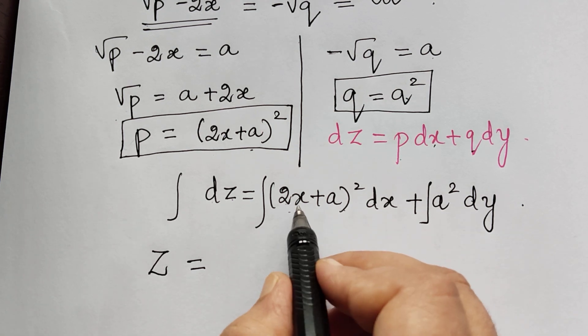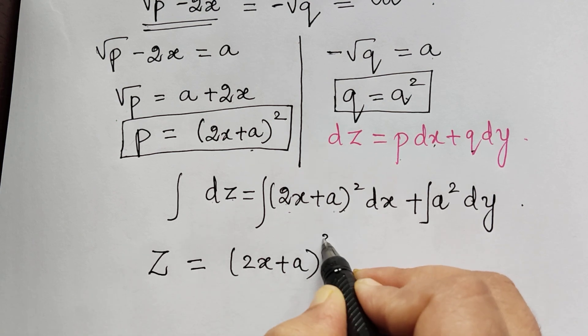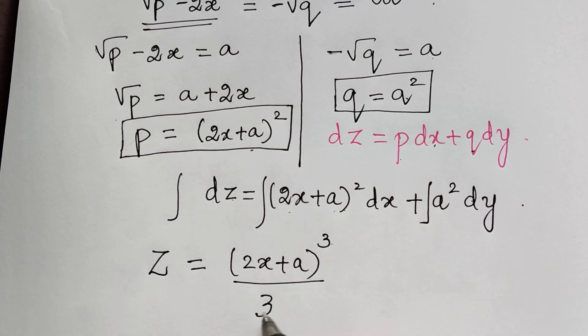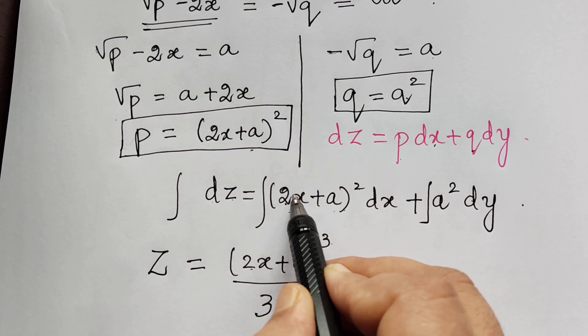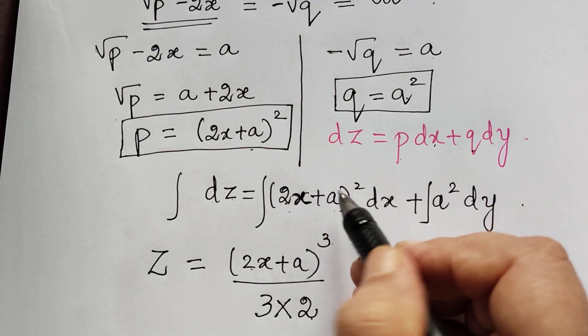In the denominator, we have to multiply by 2, which is a constant in multiplication with the variable x. By the rule of integration, we have to divide by the constant that is in multiplication with the variable. So here, we are taking this 2 in the denominator.